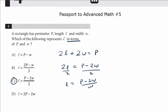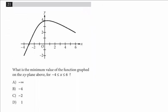Alright. The next advanced math question. Now we're jumping ahead to question 21. What is the minimum value of the function graphed on the XY plane above, where X is less than or equal to 6 and greater than or equal to negative 4?